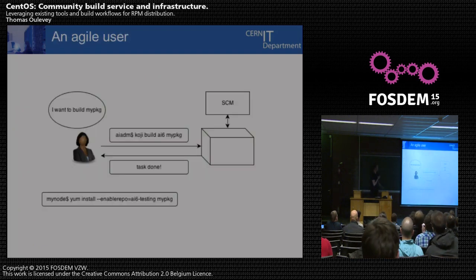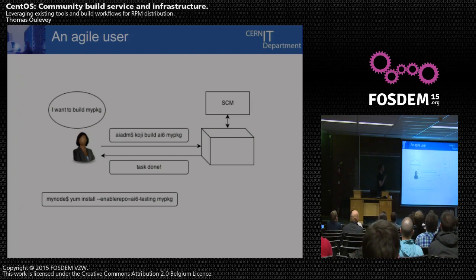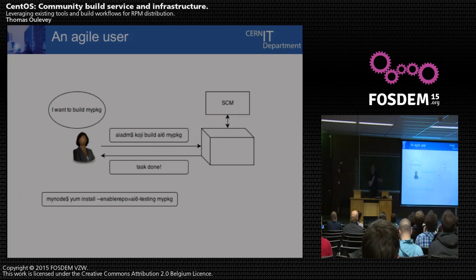This is a schema of the first thing I designed for the Koji service. A user wants to build a package, then know when it's done, and then install it on their machine. This was basically the main use case.